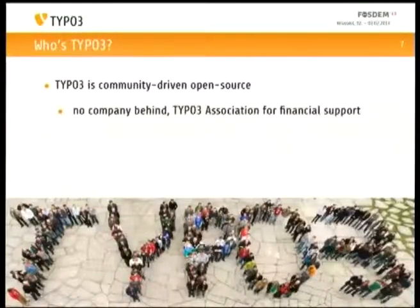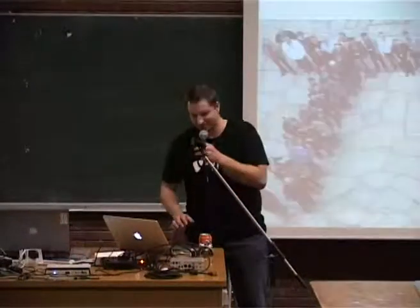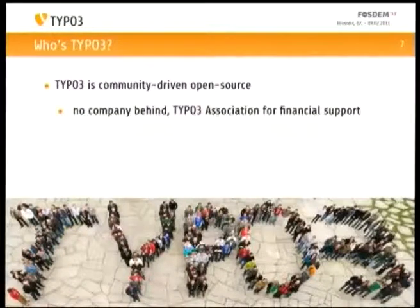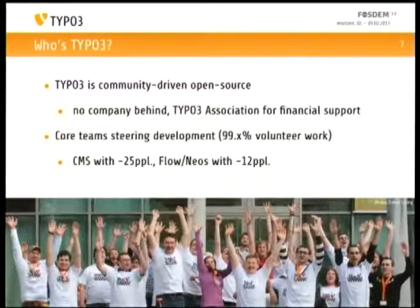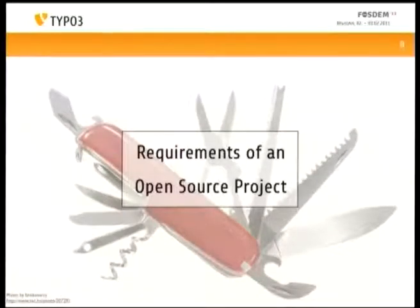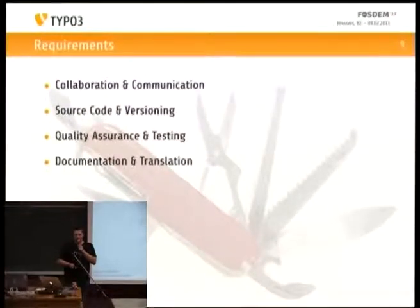TYPO3 is community-driven open source. There's no company behind it — only the TYPO3 Association for financial support, which is more about enabling costs to bring people to code sprints, etc. We have core teams with around 10 to 25 people who have commit access, and a lot of contributors. While preparing this talk I thought about what requirements an open source project has, and I identified these categories: collaboration and communication, source code and versioning, quality assurance and testing, and documentation and translation. In the following I will present the solutions we're using for these tasks.